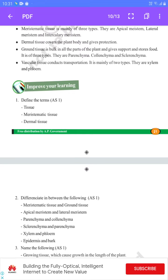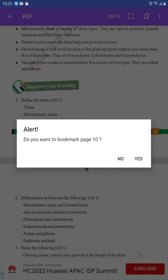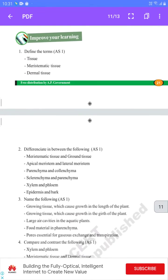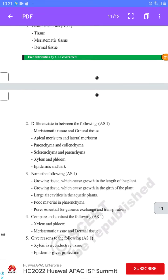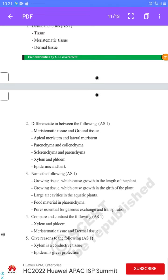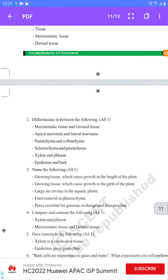Meristematic tissue definitions. Differentiate between the following: meristematic and ground tissue is very important, xylem and phloem is very important, epidermis and bark. If you do these three questions we will cover five marks.